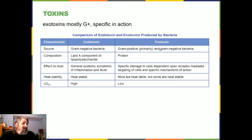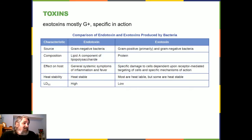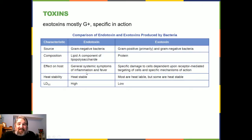Comparing endotoxins and exotoxins: exotoxins are primarily from gram-positive organisms, though gram-negatives can have them too. They are mostly proteins that induce specific cellular damage, dependent upon receptor-mediated targeting and specific mechanisms of action. Most are heat labile and can be denatured relatively easily, though some are heat stable. Exotoxins have a low LD50 — less is needed to kill. Endotoxins have a high LD50, are heat stable, and generally cause nonspecific signs and symptoms like inflammation and fever.